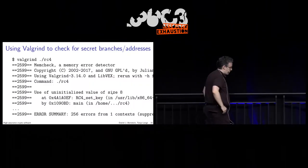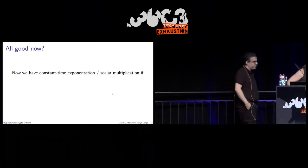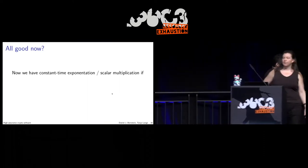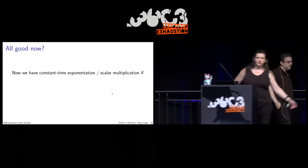This is needed for cache timing attacks and so on. If Valgrind says there are no problems, then great. Now we have constant-time exponentiation.